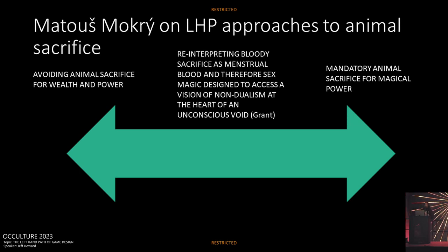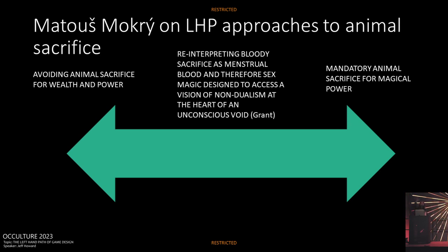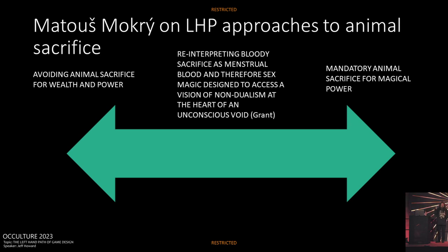Then Matus mentioned Kenneth Grant, who has an entirely different approach. Grant reinterprets the bloody sacrifice as menstrual blood — he's a Thelemite quoting that bit from Liber Al about 'the best blood is of the moon, monthly.' So Kenneth Grant's vision of the bloody sacrifice ends up being about menstrually-based sex magic, designed to access a vision of non-dualism at the heart of an unconscious void. After Matus finished speaking, I raised my hand and asked: 'How is menstrually-based sex magic connected to the accessing of non-dualism at the heart of an unconscious void?' He looked at me and said, 'I don't know.' So I spent the next six months reading the Typhonian Trilogies trying to figure this out and how we might apply it to games.